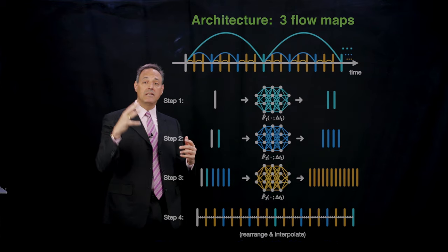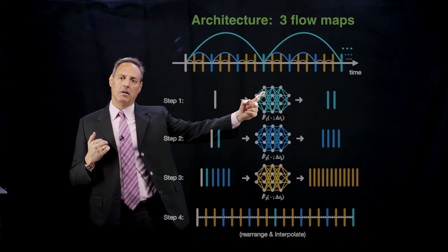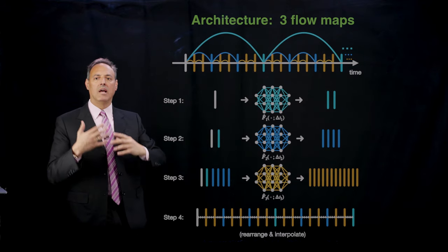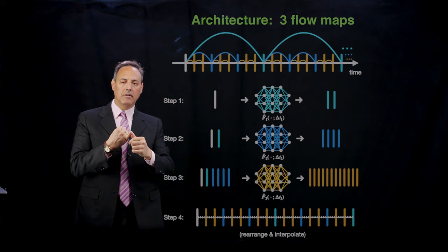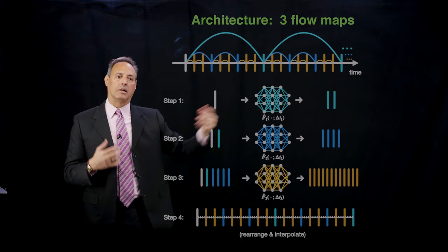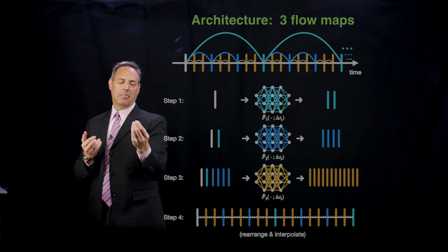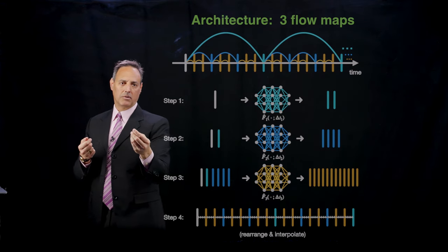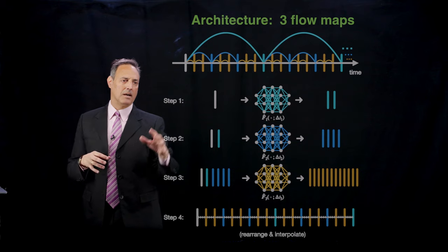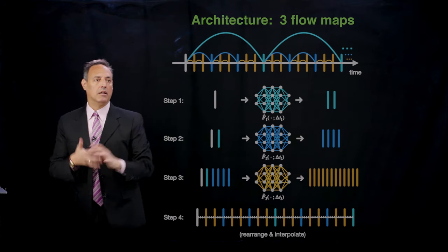Step four — you rearrange and interpolate everything in between. There are the big cyan steps, the blue steps in between, and then the orange steps at the finest scale. You're learning all three stepping algorithms simultaneously, and they're leveraging each other to make a future state prediction. You have three different flow maps: fast scale flow map in orange, medium scale flow map in blue, and slow scale flow map in cyan. This allows you great flexibility — resolving fast, slow, and medium scale physics correctly, and walking very efficiently far into the future to make predictions.